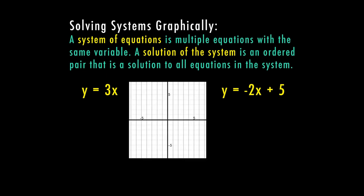We're going to use slope-intercept form and graph both equations. Our first equation, y equals 3x, does not have a y-intercept, so this one is going to go through the origin. I'm going to put my first point at (0, 0). Then I know that 3 is my slope, and my rise over run is 3 over 1, so I'm going to go up 3 and then right 1 to put a point.